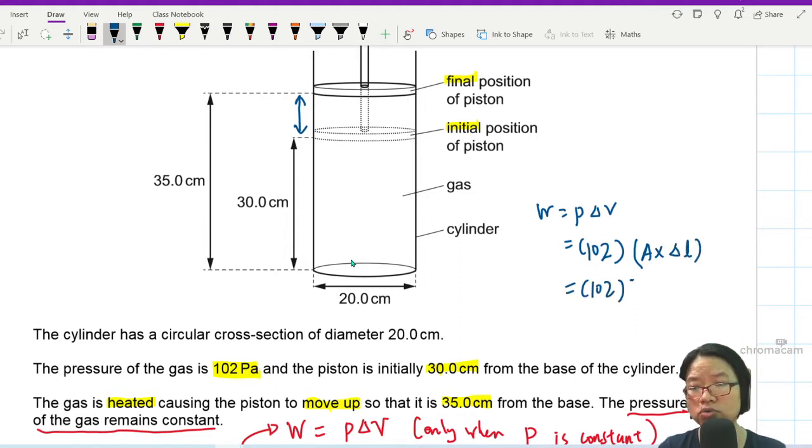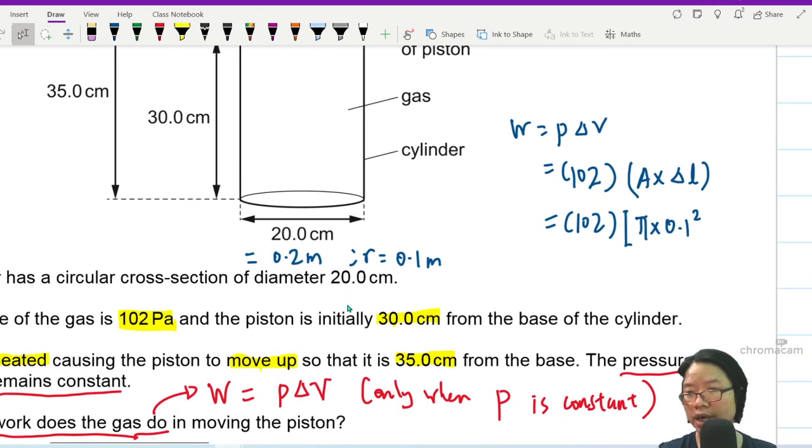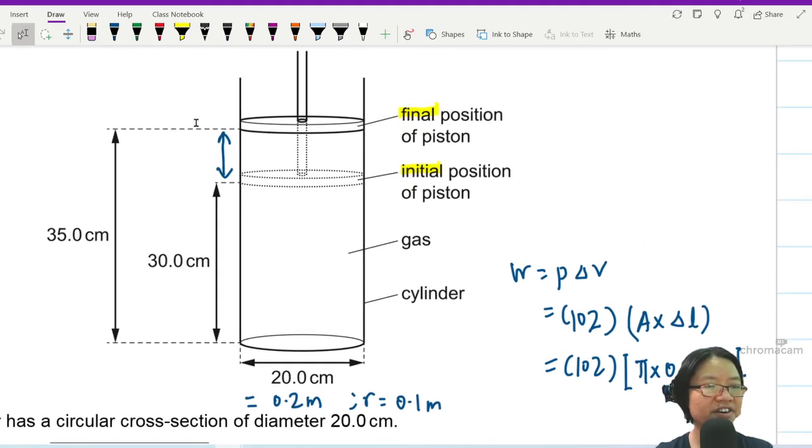So 102, what is our area? Pi R square. So 0.1 square. This is 0.2 meter. So R is 0.1 meter. Pi R square times change in length. What's our change in length? 5 cm. I'm just going to change it to meter, 5 times 10 to the power of negative 2 meter.